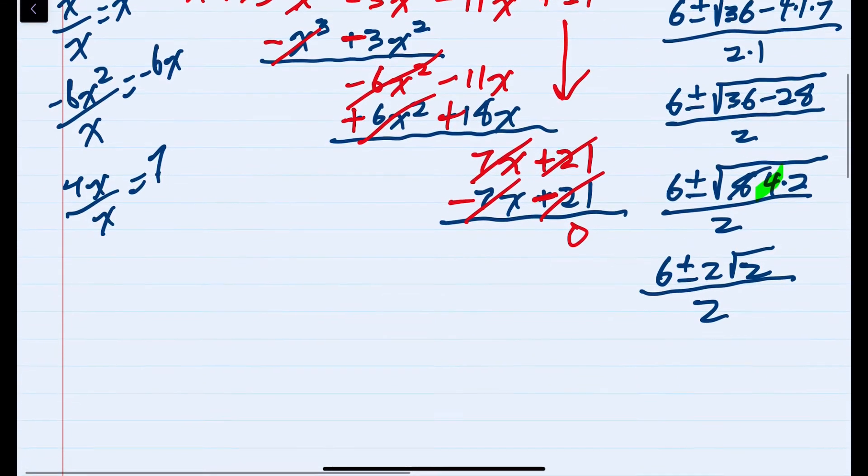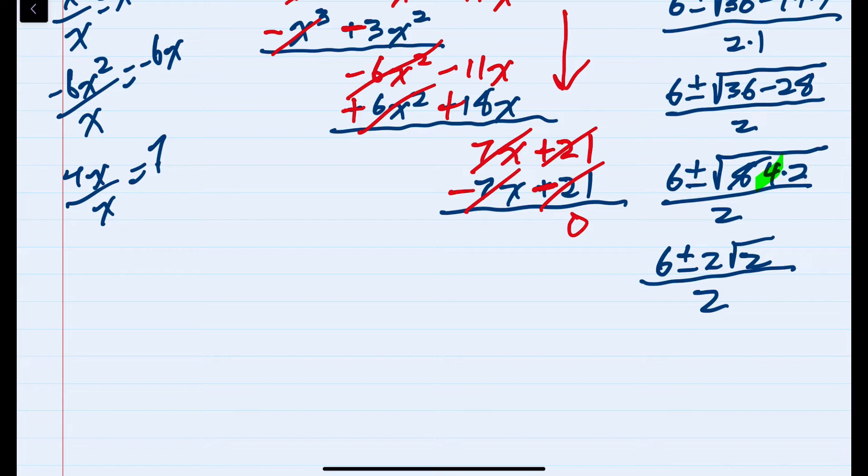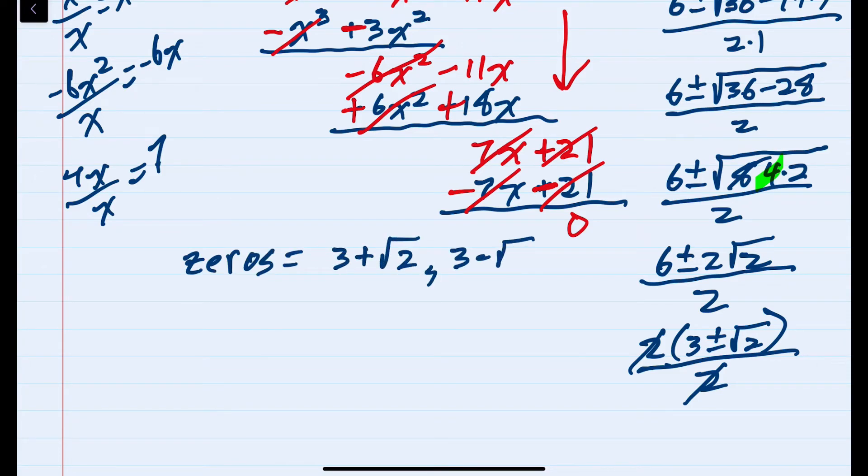And lastly, we can simplify this. Since each term in the numerator has a 2 factor, I could bring that 2 out and be left with 3 plus or minus the square root of 2, and since this is over 2, these 2s cancel, and I'm left with 2 zeros: 3 plus the square root of 2, and 3 minus the square root of 2.